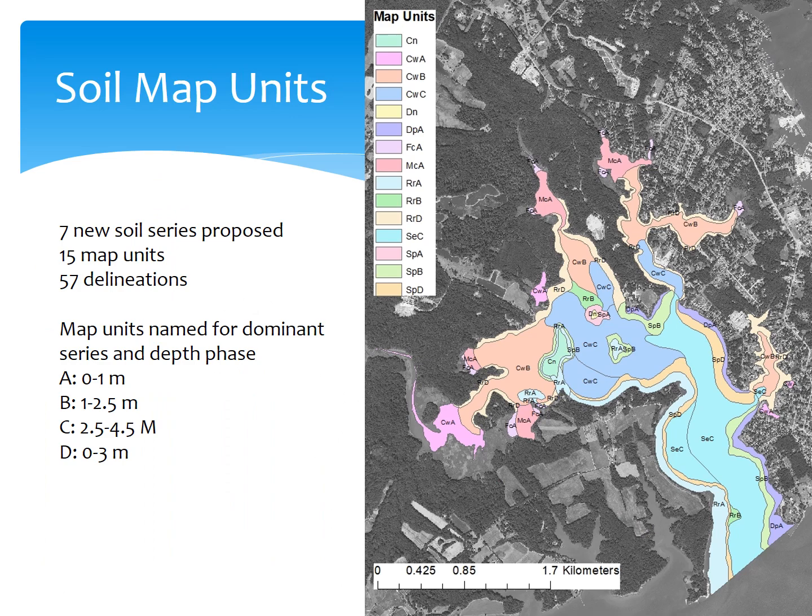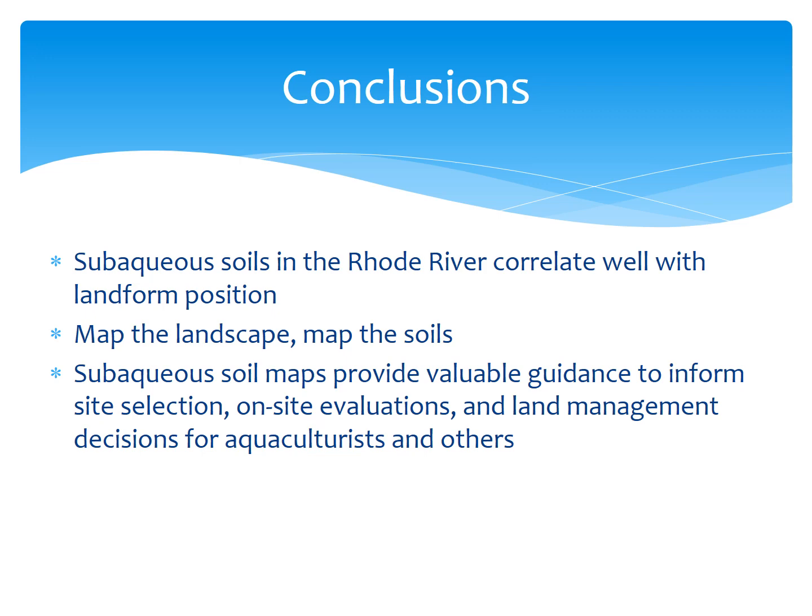With that, we can develop our soil map units. We developed seven new proposed soil series, 15 map units, and 57 delineations. The map units are named for the dominant soil series — the first two letters — and a depth phase, which is the third letter, particularly useful in the subaqueous environment. In conclusion, subaqueous soils in the Rhode River do correlate well with landform position, continuing the pedogenic concepts developed over the past century. As long as you understand the soil-forming factors, if you map the landscape you can map the soils and do a little ground-truthing to check as you go. Our next step is to test this in an adjacent sub-estuary. Subaqueous soil maps provide valuable guidance for site selection, on-site evaluations, and land management decisions for aquaculturists and others.